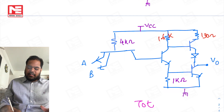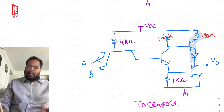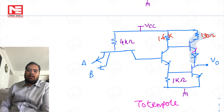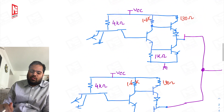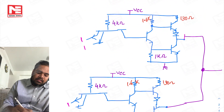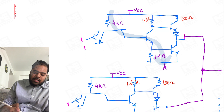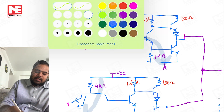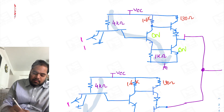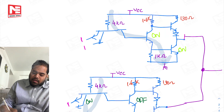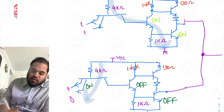Now let's take a TTL totem pole circuit. In the totem pole circuit, we have an active pull-up — instead of a resistor, we have a current source kind of arrangement that pumps a lot of current. Let's apply the same inputs: 1,1 on one gate and 1,0 on the other. Current will flow and the relevant transistors will turn on.